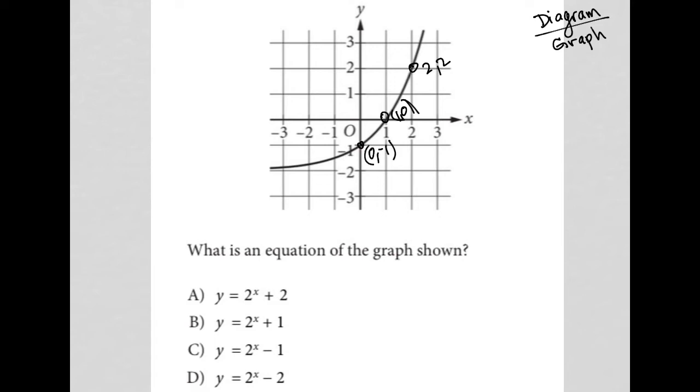So the question says, what is an equation of the graph shown? Well, here's what's great about identifying these ordered pairs. The equation should work with the ordered pair. What I mean by that is I should be able to plug in an ordered pair into the equation and get a true statement. For instance, I see that all of these are exponential, which it should be because it's an exponential graph.